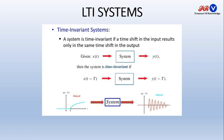In this slide we will study the time invariant system. A system is time invariant if a time shift in the input results only in the same time shift in the output. Whatever time shift we are doing at the input side, it must occur at the output side. If we have signal X as input and Y as output and the system is time invariant, then a time-shifted input produces a time-shifted output. T is the delay by which we are shifting our input signal.